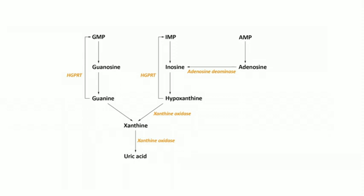With purines, you don't always have to make them from scratch — you can recycle and salvage them via the purine salvage pathway. When you break down nucleosides like GTP, you strip off phosphate groups from GTP to GDP to GMP to guanosine; stripping the ribose sugar leaves the nucleobase guanine. The ultimate end product of purine breakdown is uric acid, preceded by xanthine.